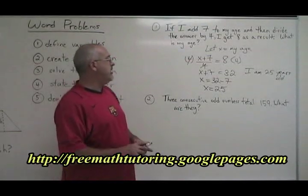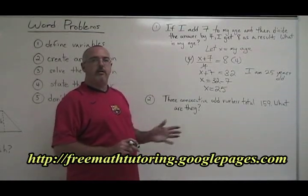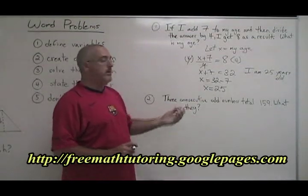Example 2: Three consecutive odd numbers total 159. What are they? The trick here is that there is more than one unknown in this question. They want more than one answer from you. They want all three of these odd numbers.